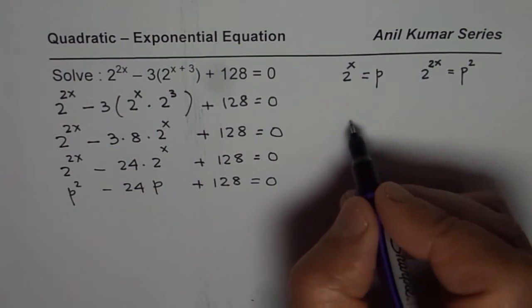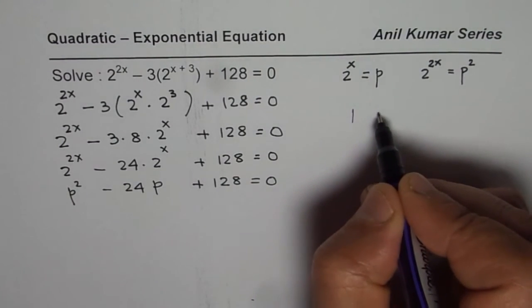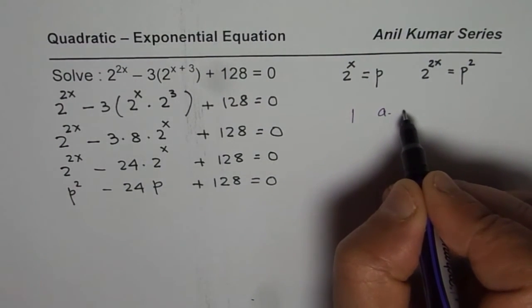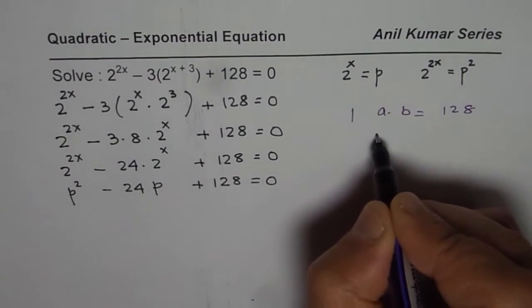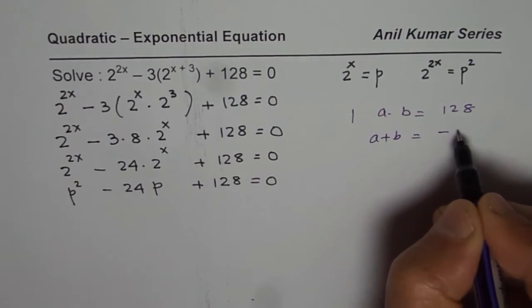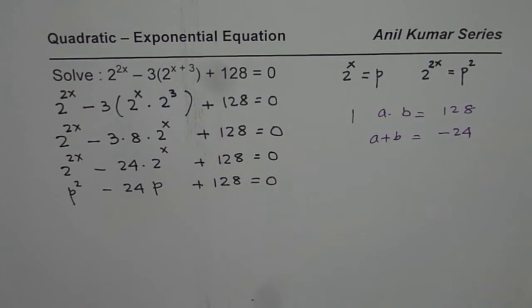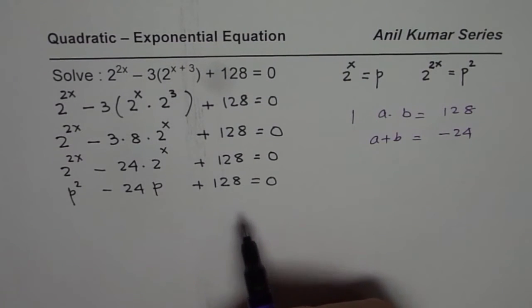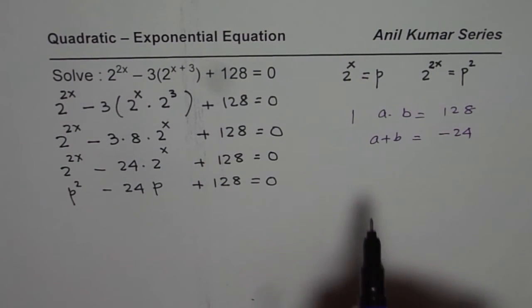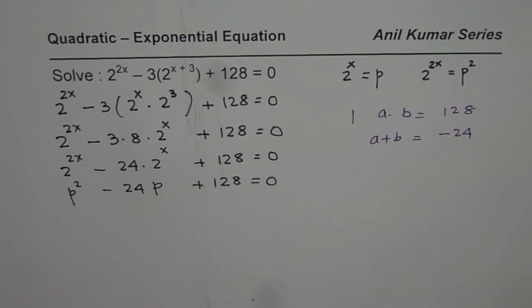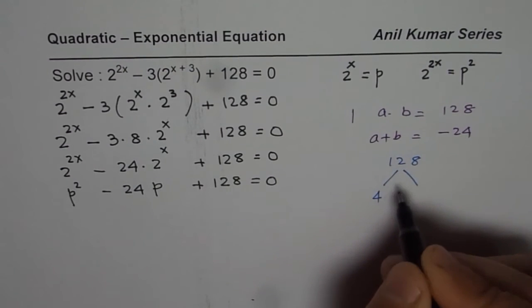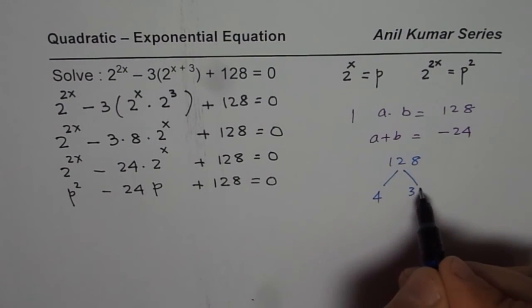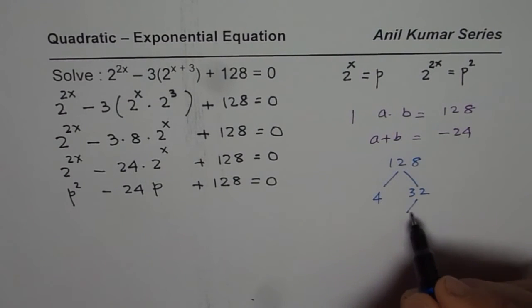Now let us see how to factor this particular quadratic equation. In this case we are looking for two numbers a and b such that a times b should be 128 and sum of a and b should be minus 24. So what are these numbers? When the numbers are big it is not so easy to get these numbers. Let me show you a technique of doing it. So we actually find the factors for 128. You could say 4 times 32. And then 32 is 16 times 2. So that gives you a few factors of 128 to play with.